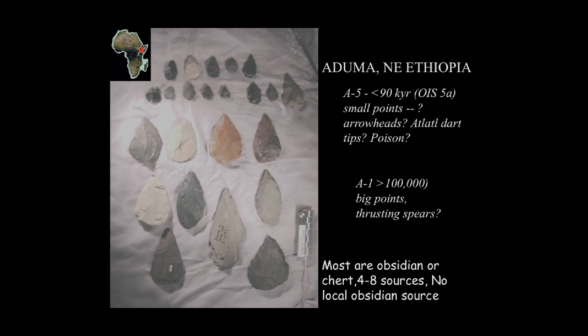This is an example from Aduma in northeast Ethiopia, where I worked in the 1990s. We have a progression from big points more than 100,000 years old to much smaller ones that are perhaps 90,000 to 80,000 years old. All of these points are trimmed at the base for hafting. Almost all of them are obsidian or chert from four to eight different sources, and there are no local sources — so again, we're looking at long-distance movement of this material.